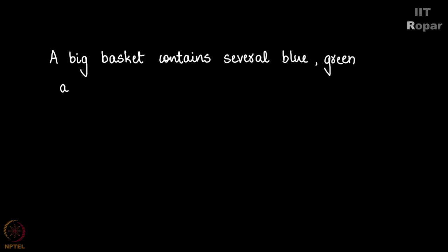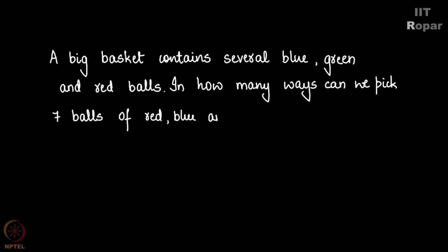Before moving ahead, let us solve this question. Assume there is a big basket containing several blue, green, and red balls. Now the question is, in how many ways can we pick 7 balls of red, blue, and green color out of this big basket? Now there is no constraint given here, you see. You can also pick 0 balls of some color.